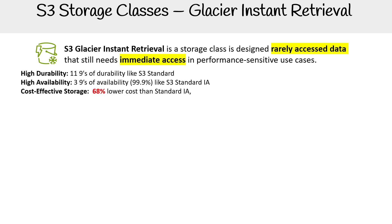Its cost effectiveness is 68% lower than Standard-IA — that's crazy low. It's great for long-lived data that is accessed once per quarter. There are retrieval fees, just like Standard-IA. You only want to access the files once per quarter or not at all.